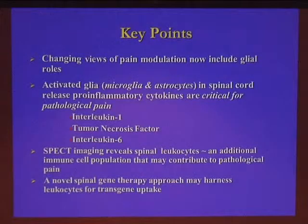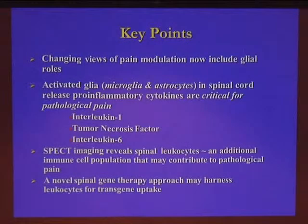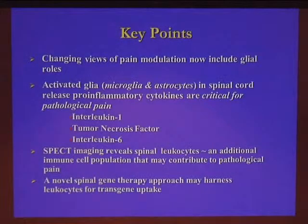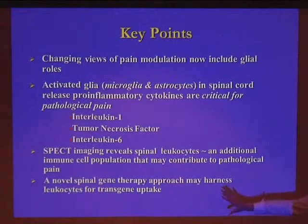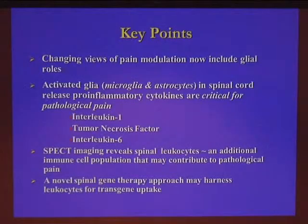The first key point has to do with how we conceptualize pathological pain. When we learn about pain in medical school textbooks, we think about it very simply — we don't think about glial cells. When glia are activated, they release pro-inflammatory cytokines like interleukin-1, tumor necrosis factor, and interleukin-6. Through SPECT imaging, we're starting to observe that there is leukocyte extravasation occurring in the spinal cord — an additional cell population — perhaps important in ongoing pathological pain processing. And the presence of these leukocytes may not always be a bad thing; we might be able to harness them therapeutically, perhaps through optimizing non-viral gene therapy.